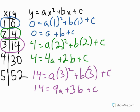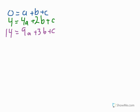That becomes 14 equals 9a plus 3b plus c. Now I have my three equations for the system of equations to solve for a, b, and c. With this system of three variables, there are multiple ways to solve it — I'm going to use the elimination method. I notice all three equations have a c term with a coefficient of 1, which makes it easy to eliminate c. So I'll multiply the first equation by negative 1, distributing to both sides.